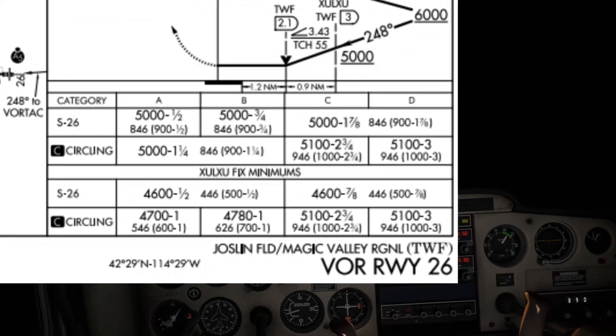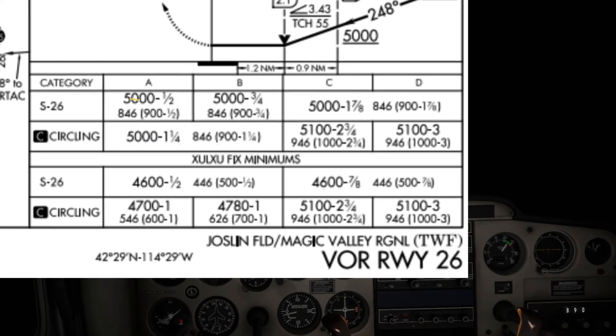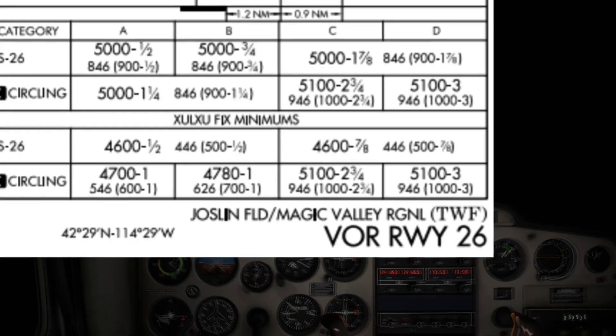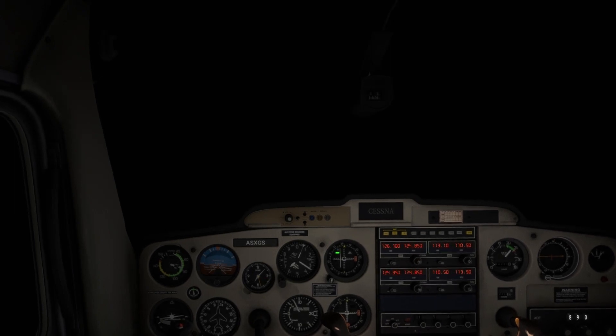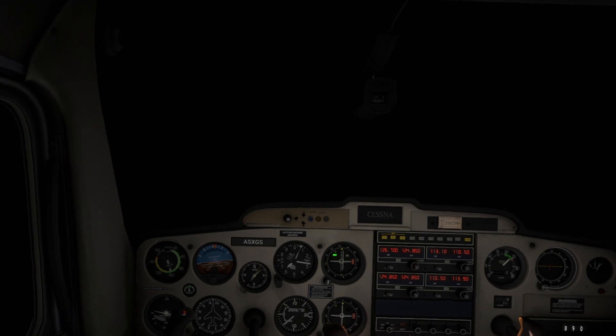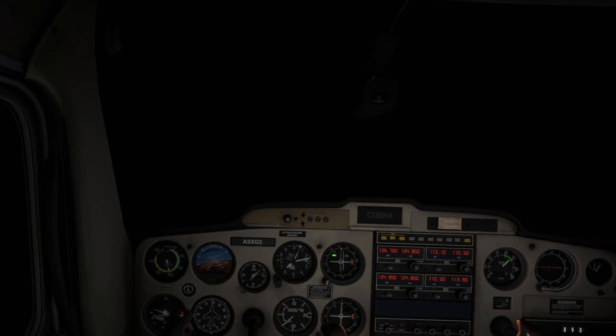The decision altitude is 846 feet AGL and is equal to the minimum descent altitude less the touchdown zone elevation for the airport. The pilot must not descend below the minimum descent altitude until the runway is in sight. The blue blinking light at the top of the instrument panel indicates we are at the outer marker for runway 26, which in this case is roughly five miles from the runway. Outer markers typically identify the final approach fix and are situated four to seven nautical miles from the runway threshold.